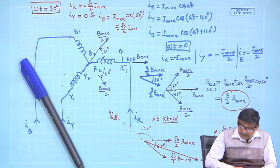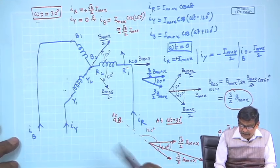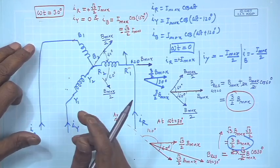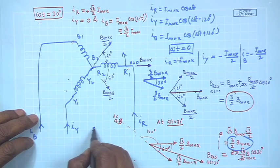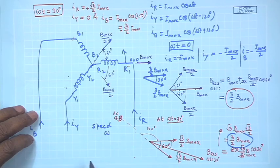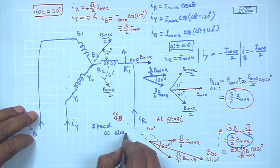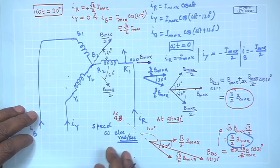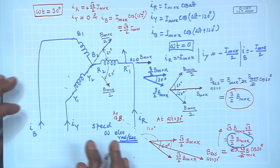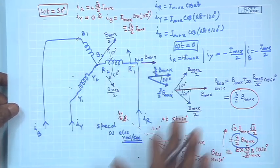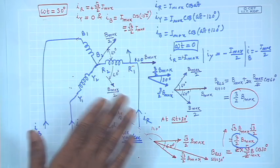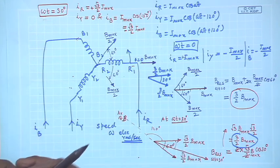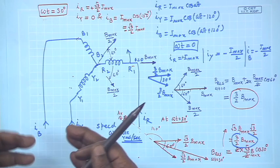What is the speed? The speed is the same as omega, because whatever omega t is — say 30 degrees — by that time the field has gone by 30 degrees. Therefore, speed is omega — omega electrical radians per second. Now, the question is: do we have to keep proving this for various discrete time instants? Is it true for all time?